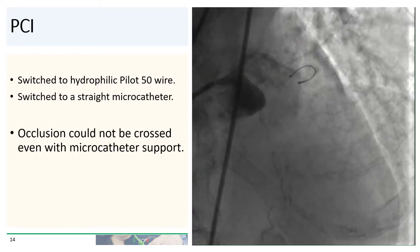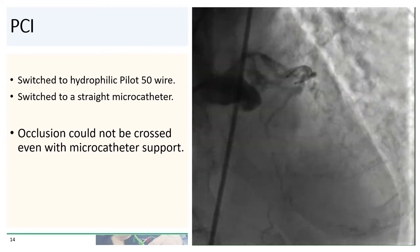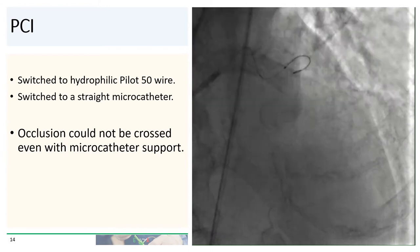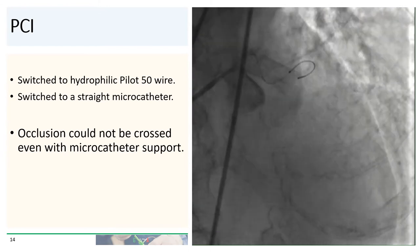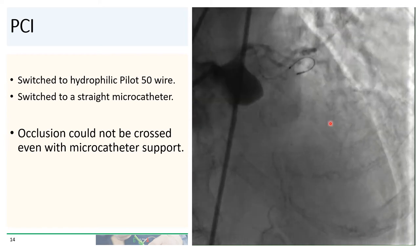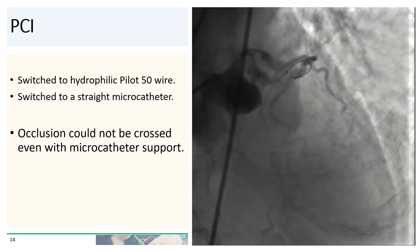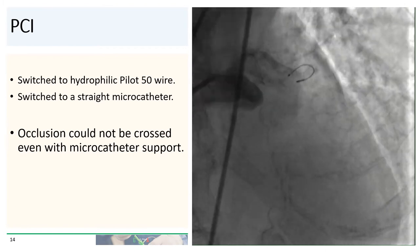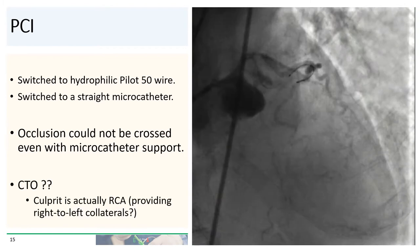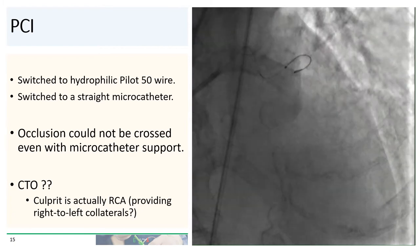To try to get through the occlusion, we switched out to a hydrophilic Pilot 50 wire and also switched to a straight microcatheter. But despite using the hydrophilic wire with microcatheter support, the occlusion still could not be crossed, and the hydrophilic wire kept curving up within the blood vessel. At this point, we began to wonder whether this might actually be a CTO.